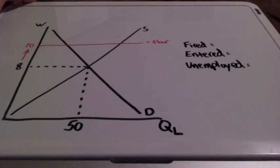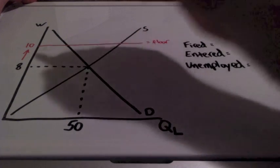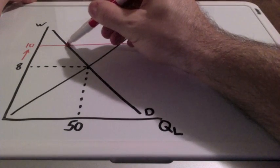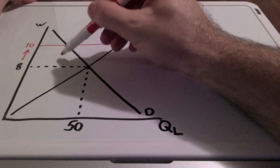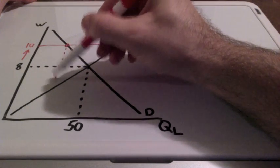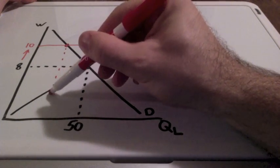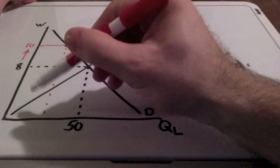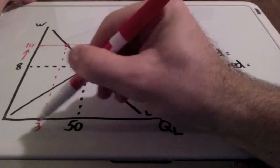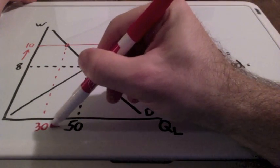What will happen to the quantity demanded and quantity supplied of labor? Well, quantity demanded of labor will go down, and let's say it goes down to 30 employees.